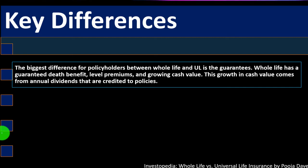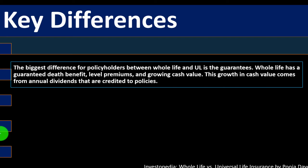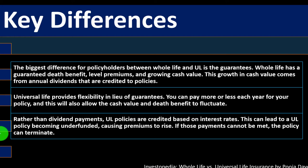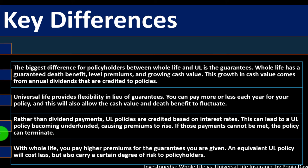Key differences: the biggest difference between whole life and UL is the guarantees. Whole life has a guaranteed death benefit, level premiums, and growing cash value — this growth comes from annual dividends credited to policies. Universal life provides flexibility in lieu of guarantees. You can pay more or less each year, and this will also allow the cash value and death benefits to fluctuate. Rather than dividend payments, UL policies are credited based on interest rates. This can lead to a UL policy becoming underfunded, causing premiums to rise, and if those payments cannot be met, the policy can terminate. With whole life, you pay higher premiums for the guarantees you receive; an equivalent UL policy will cost less but carry a certain degree of risk.